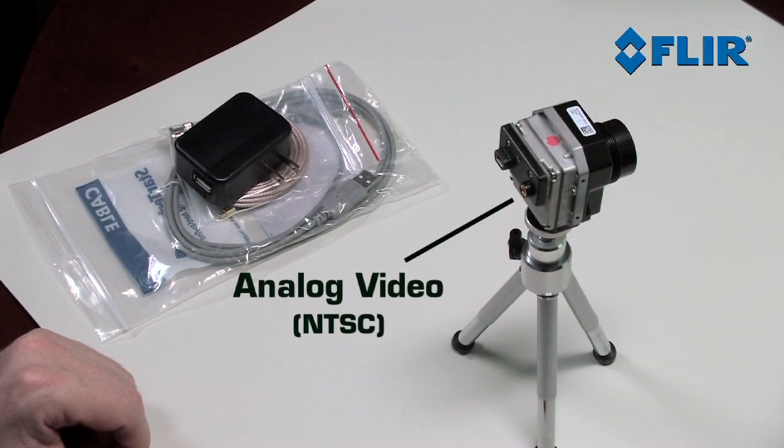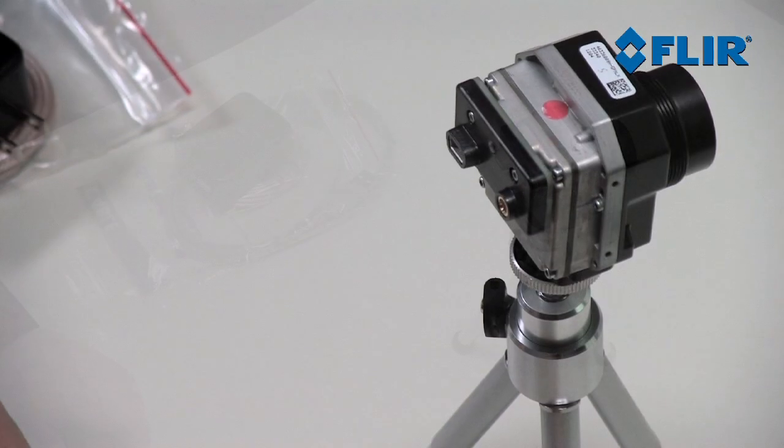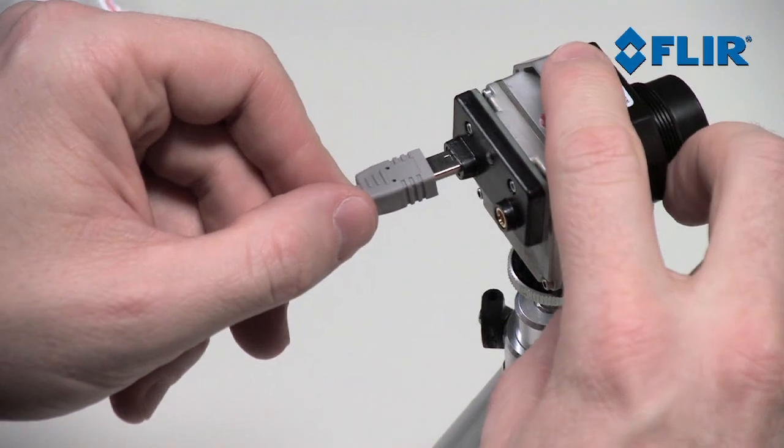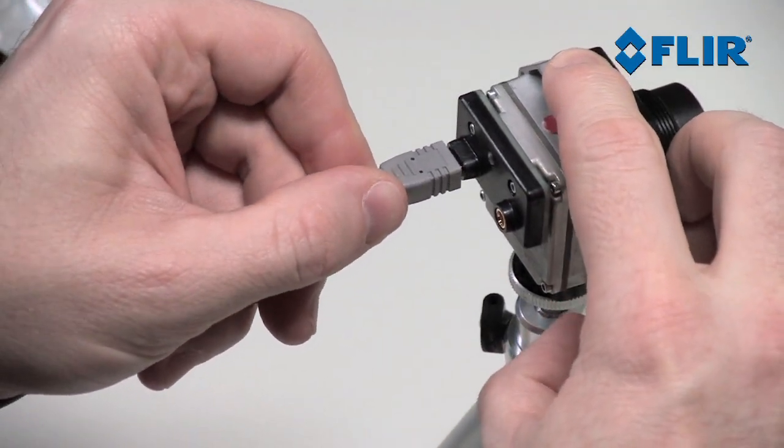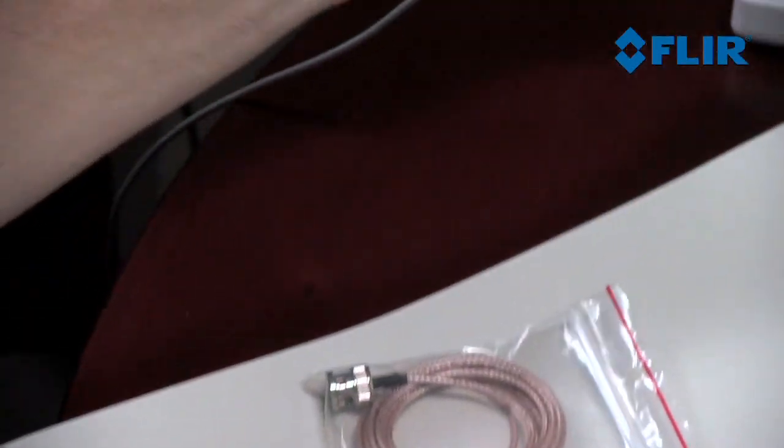The VPC module provides two connections: one for analog video and another for power and serial communication. Plug the USB mini cable into TAU-2 and plug the standard USB end into the power adapter. Go ahead and plug in the power adapter now.